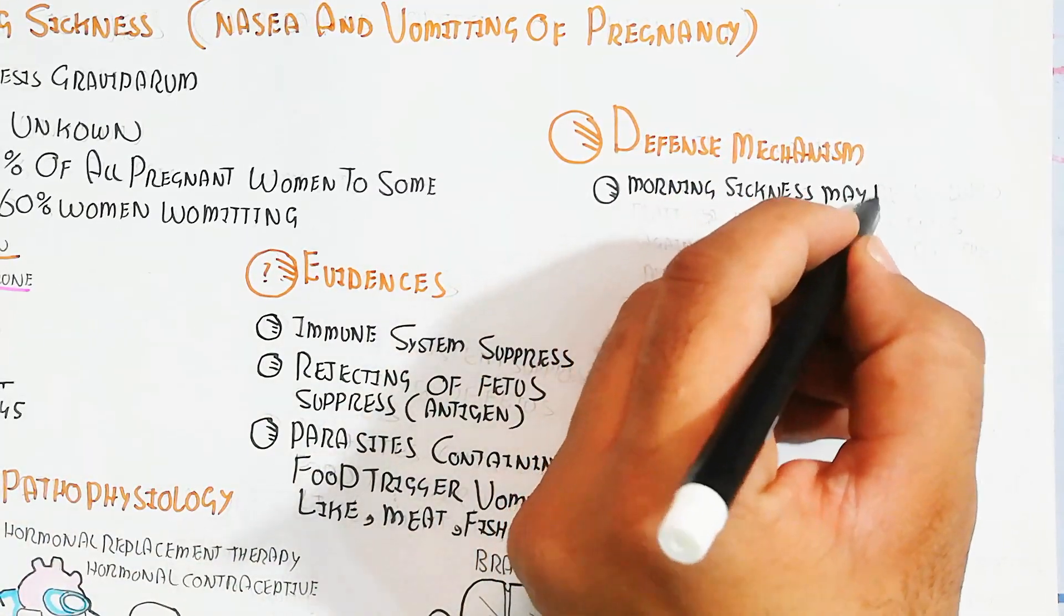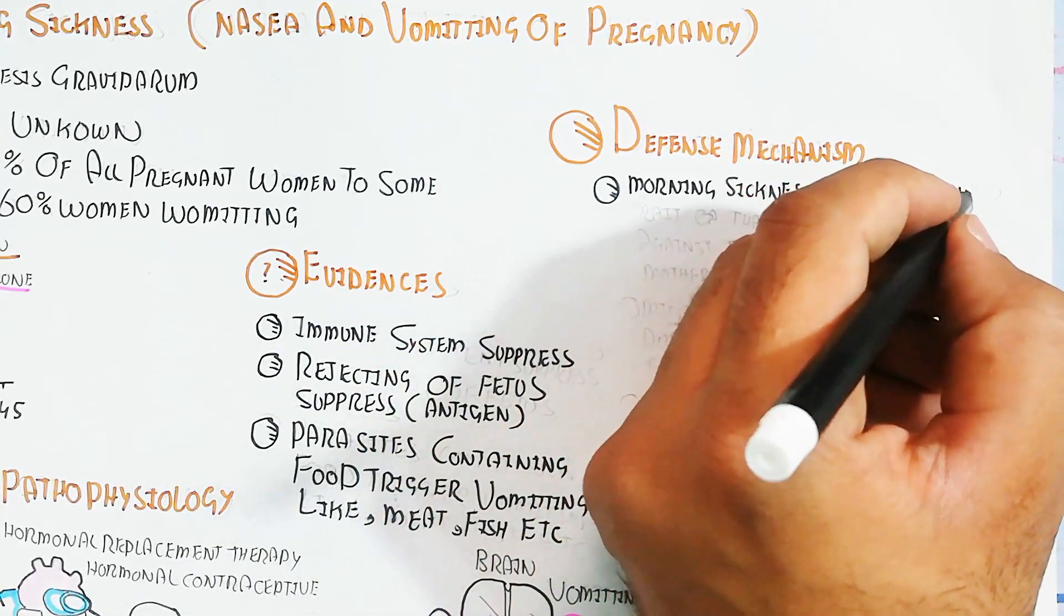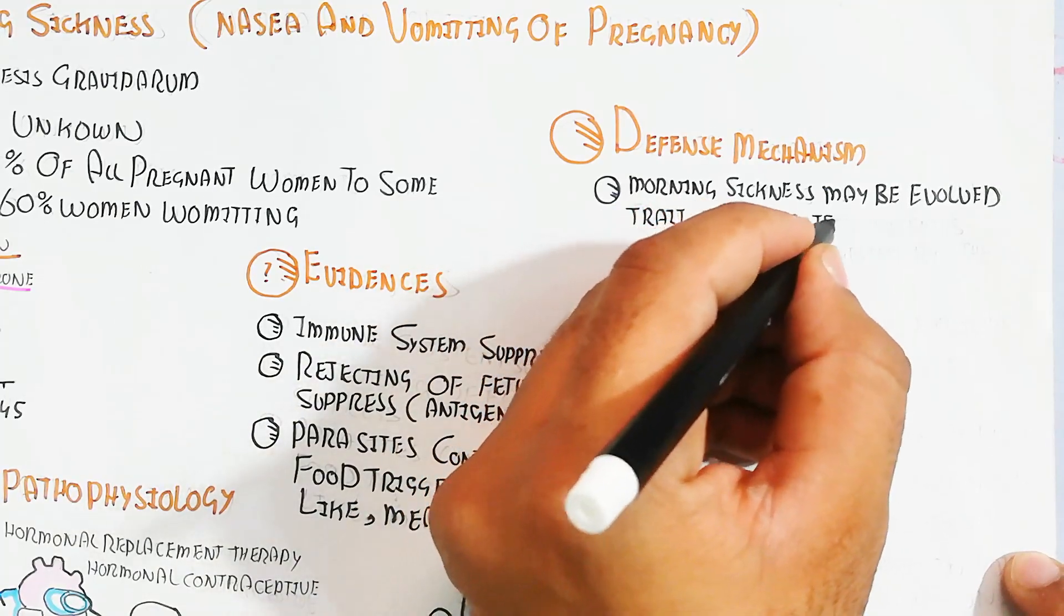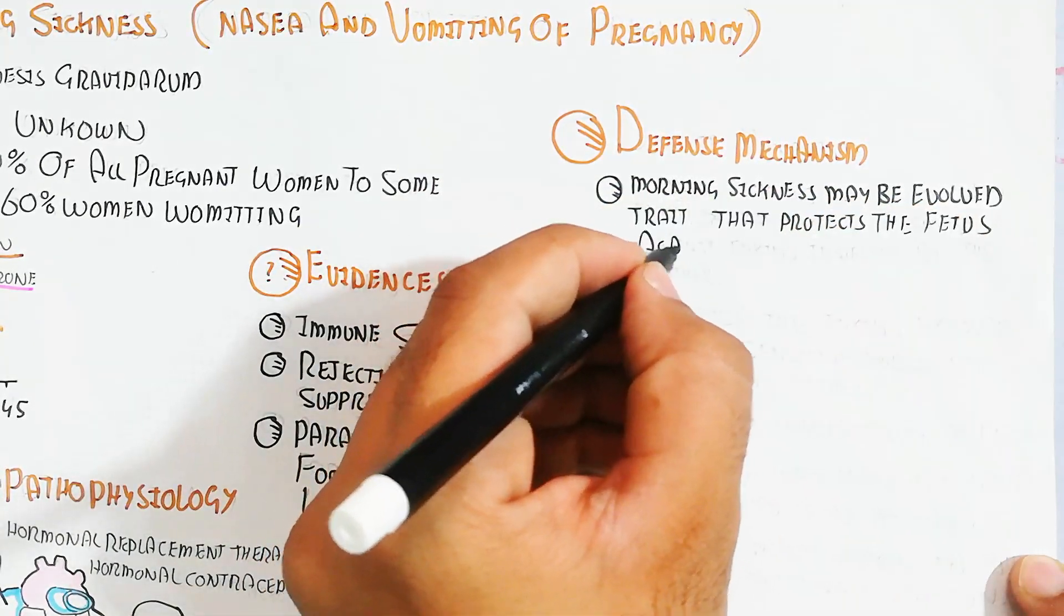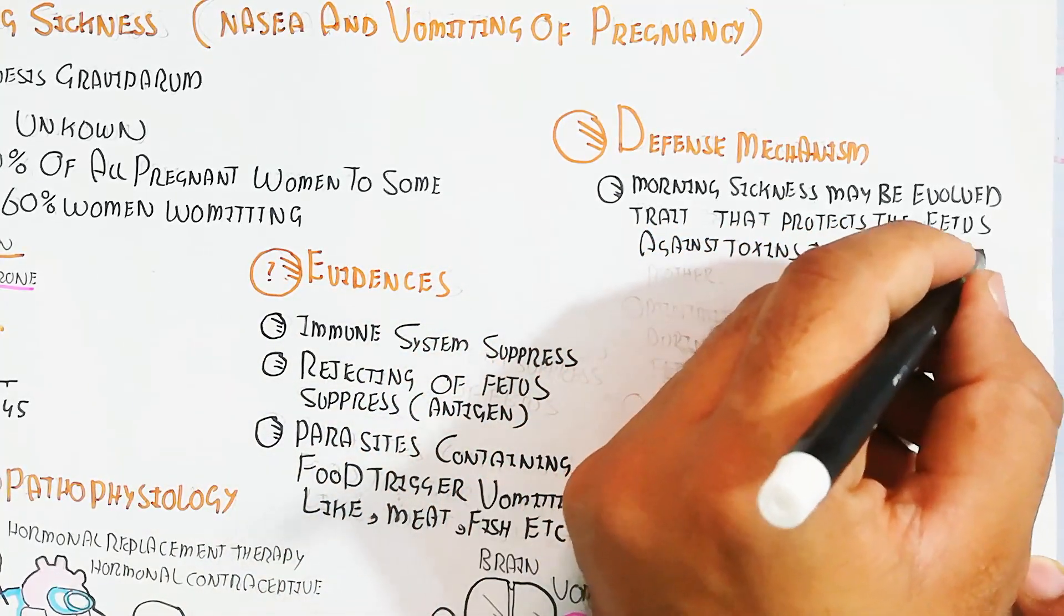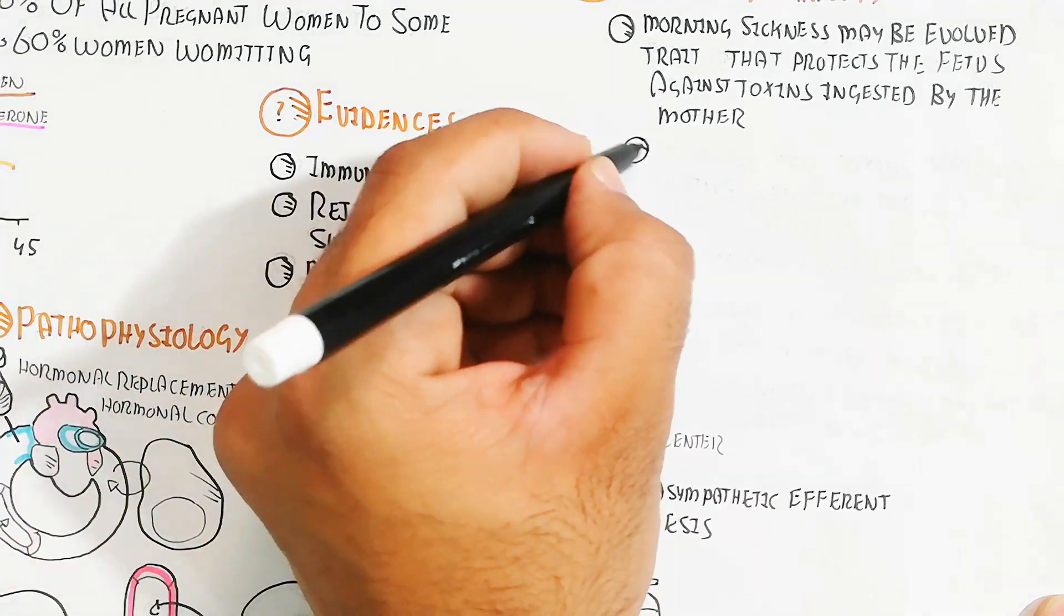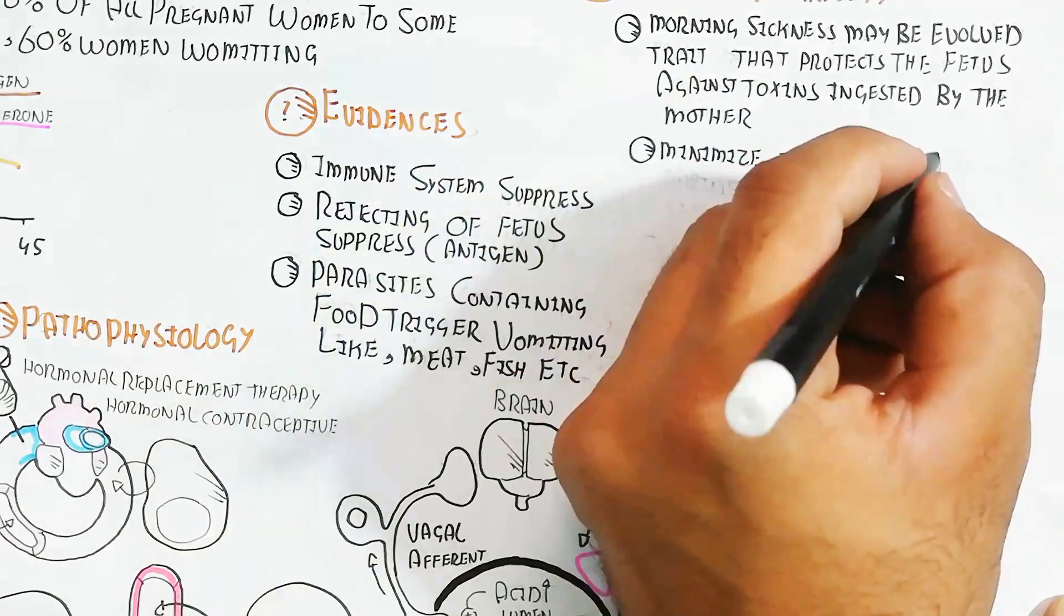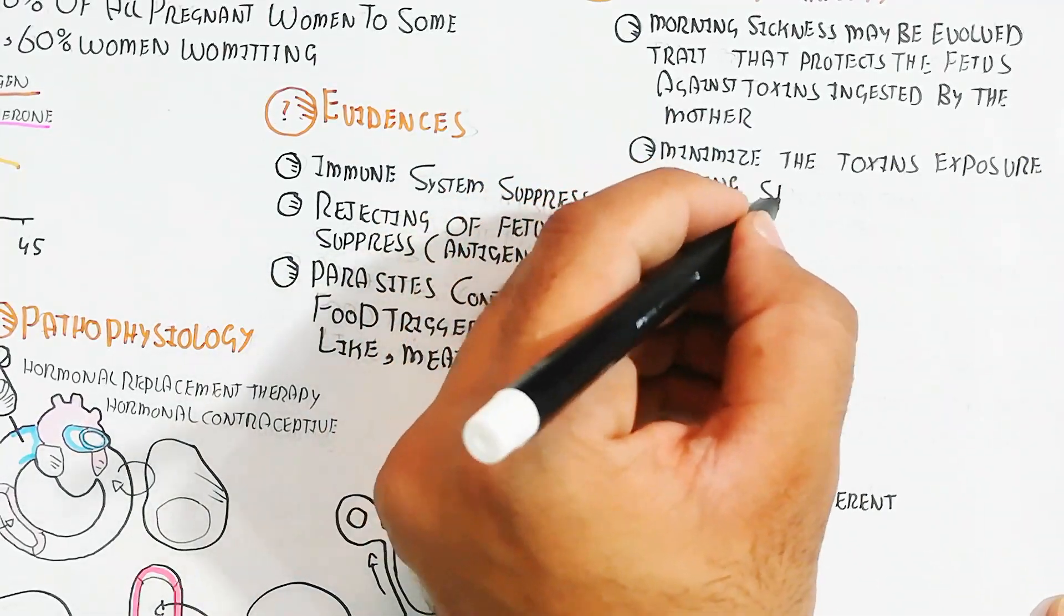The defense mechanism: morning sickness may be an evolved trait that protects the fetus against toxins ingested by the mother. Some women have it but some don't due to evolutionary adaptation. Some fetuses create more immunity-like defense mechanisms and minimize toxin exposure.